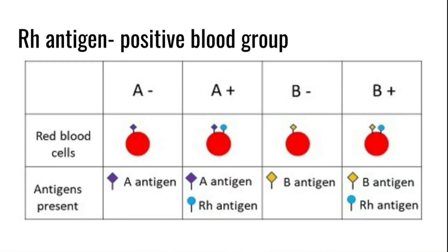Now we can see how we say a blood group is positive or negative. If the blood group is positive, the RBC have an additional antigen called the RH antigen. In this table, you can see that for A positive blood, there are two antigens present on the RBC: A antigen and RH antigen. But if the blood group is negative — for example, A negative — only the A antigen is present and RH antigen is not present. So if there is no RH antigen, then the blood group is said to be negative.